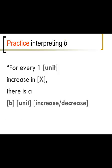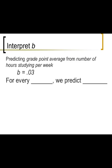This is a template for how to construct a statement interpreting B. For every one, and then put in the name of the units of the variable you're talking about for X. Increase in, and then put the name of the X variable. There is a, put in the number for B, and then the name for the kinds of units of Y. Then you do increase or decrease depending on whether B is positive or negative. This isn't the only way you can do it, but this is a good place to start.